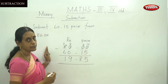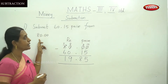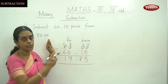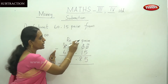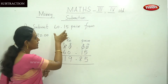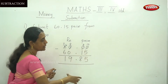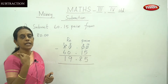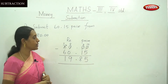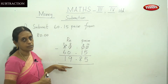This is the subtraction method. First you have to check which number is the bigger one and which is the smaller one. Then write them in the correct format — that is Rupees and Paise — with the bigger number at the top and the smaller number below. Then subtract using the regrouping method as we learnt in our previous subtraction topic.